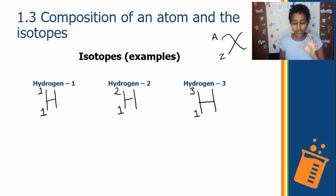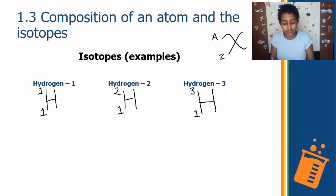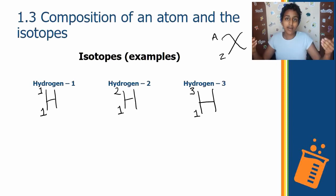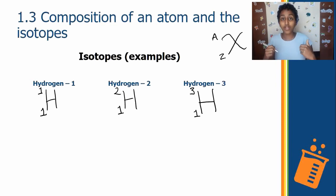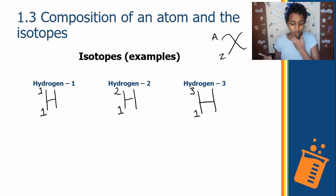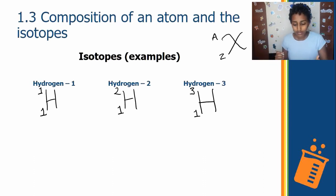Back to the example: we have three isotopes of hydrogen. They have the same atomic number but different mass numbers. To clearly show why these are isotopes, let's graphically draw how these atoms look. First, let's draw what's in the nucleus.